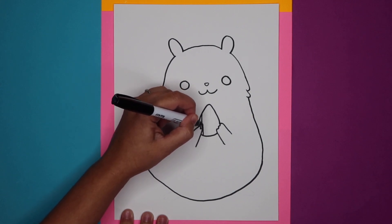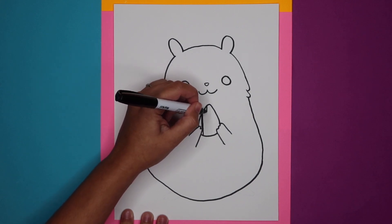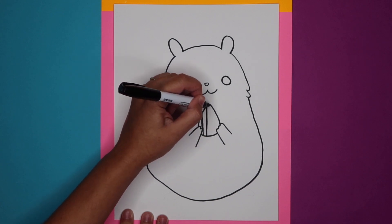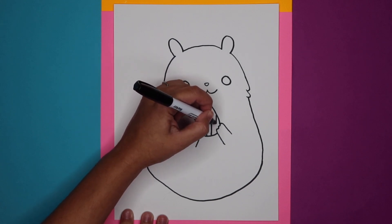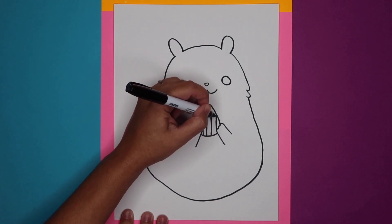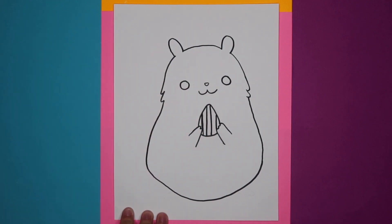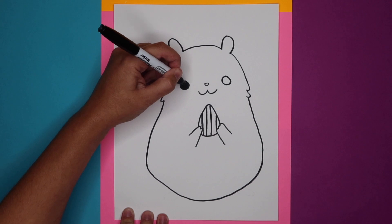I'm gonna make some straight lines to show that it's a sunflower seed. There we go. Quickly color in these eyes.